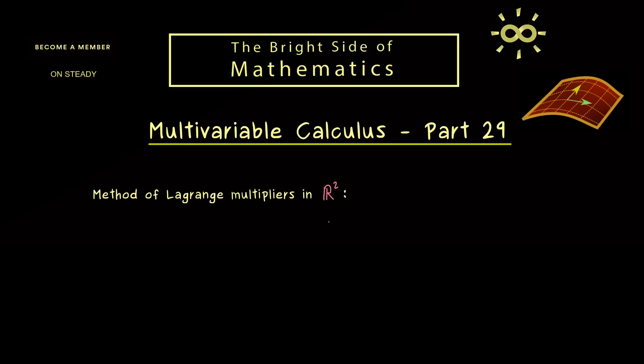With that said, let's recall the method of Lagrange multipliers in R². As mentioned in the last video, we discussed this two-dimensional case first because it's easy to visualize. So what we have here is just two C¹ functions where the function f is the one we are interested in and g gives the constraint.